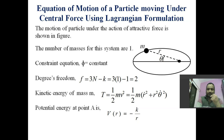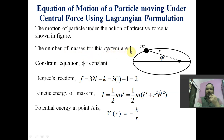The motion of a particle under the action of an inverse attractive force is shown in figure 1 — mass is moving at this point along this path. This is a planar motion, and for planar motion we need two coordinates to explain the motion of the particle. Here r and theta are the two coordinates which are changing as the mass moves from one position to another. The constraint equation for this system is phi equal to constant.